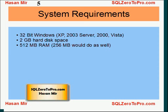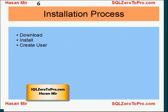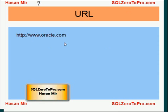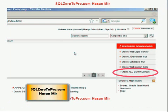The installation process mainly includes three stages: download, install, and creating the user. It's a straightforward process. You visit www.oracle.com and on the website look for the link 'View All Downloads'.